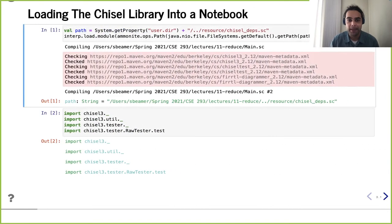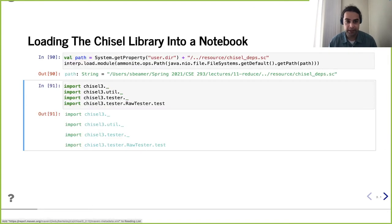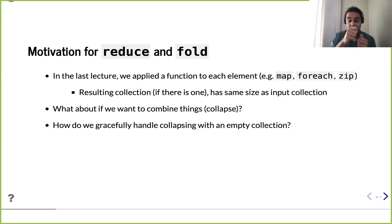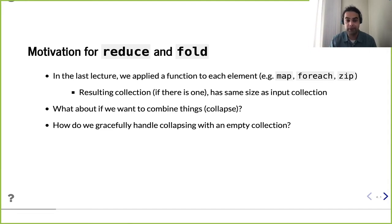So let's jump right into it and load in our notebooks. As I said at the very beginning, we've been talking a lot about map and foreach, where we can do something to every element — also zip, where we take one collection and pair up elements from another collection. The result is a collection of the same size; it's one-to-one. Foreach doesn't return anything, but it still runs one function per element. So what if we wanted to handle collapsing somehow?